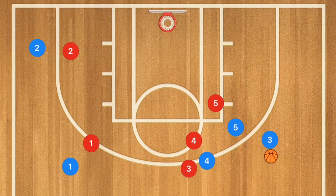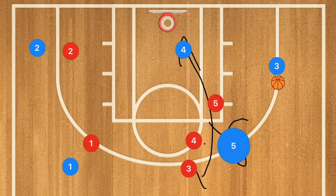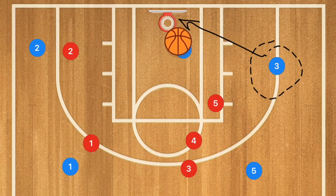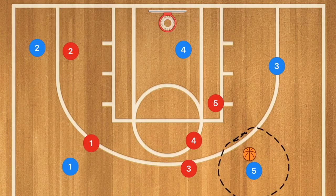Player three uses the staggered screen. The first option is player five, who pops up after the screen, while player four rolls towards the basket. Player three has two options: take that shot or drive, pass to player four for the layup, or pass to player five for the three-point shot. This is why every player should know how to shoot a three-point shot consistently — even as a center, you may find yourself taking a few three-point shots.